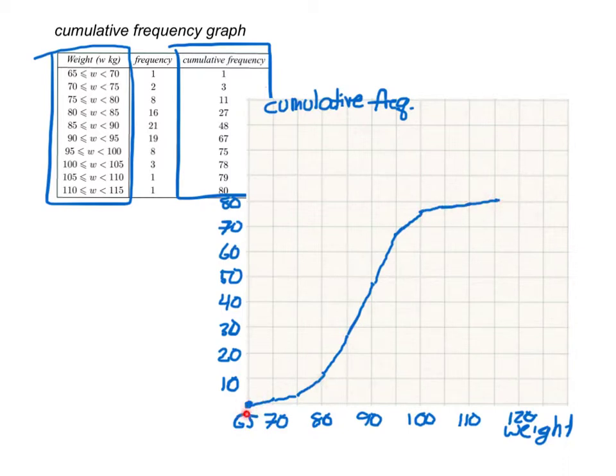Also, that this first point is going to be 0, and it's going to relate to the minimum data value possible. And this last point is going to be your highest cumulative frequency, which is the total number of data values that you have, and it will relate to the highest possible data value. Actually, just less than 115, because 115 isn't actually a data value that you can reach.